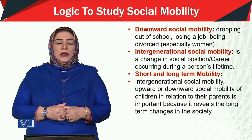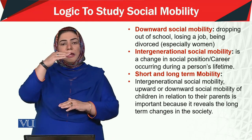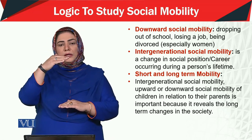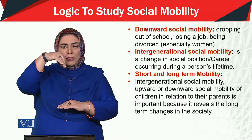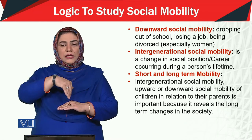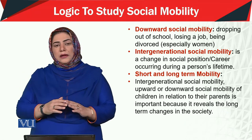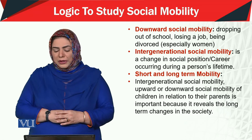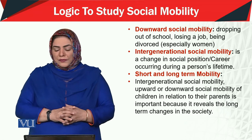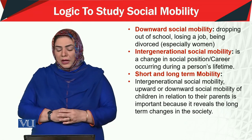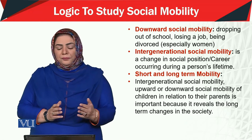Then there is downward social mobility. For example, you were at a certain position, but due to some factors, some reasons, your status moved downward — this is called downward social mobility. Examples include dropping out of school or losing a job.